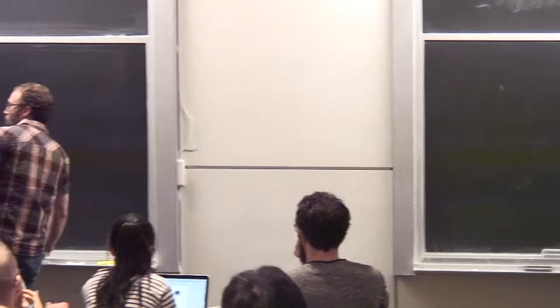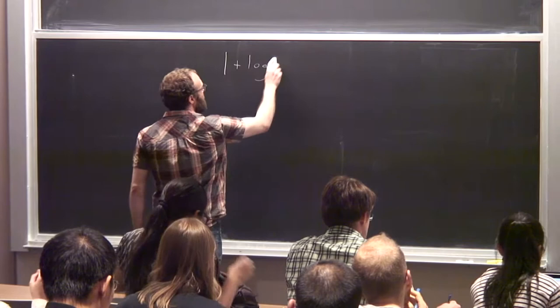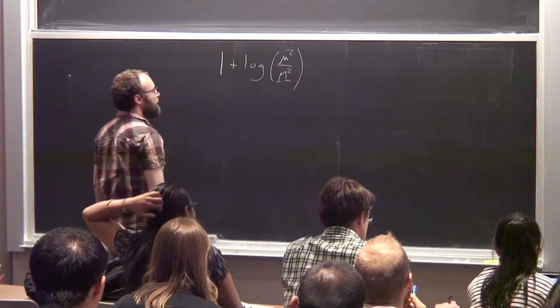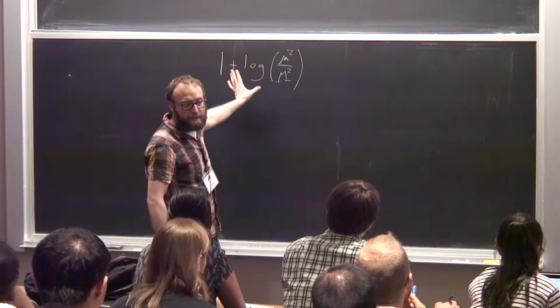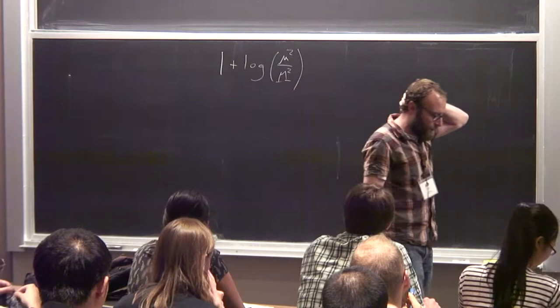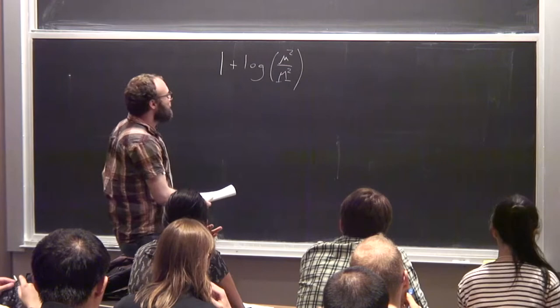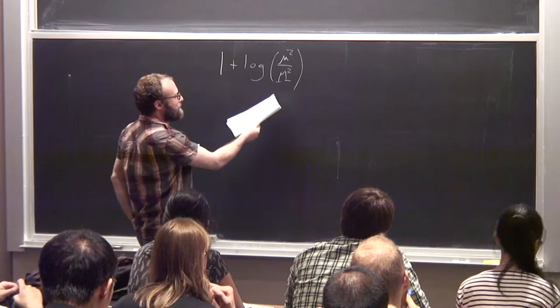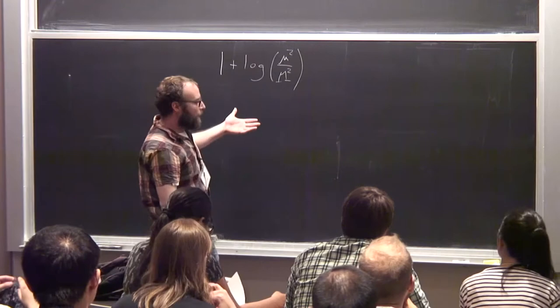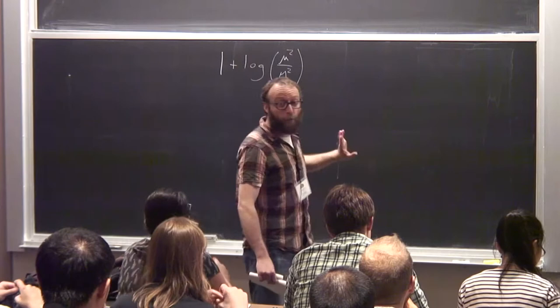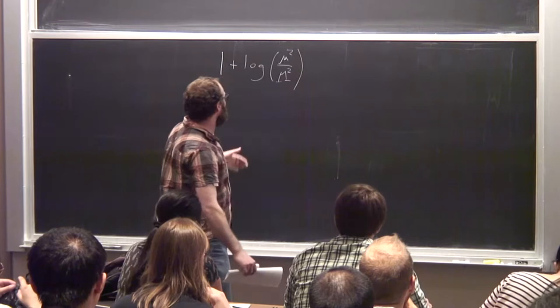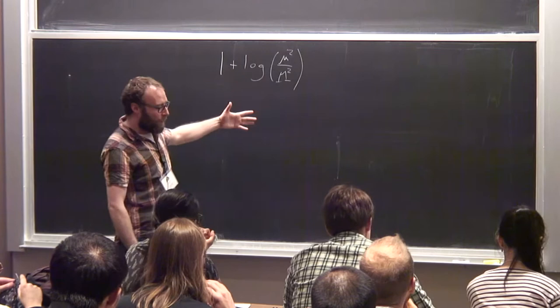I want to very briefly mention the excellent question raised about the term one plus log mu squared over m squared, and being able to choose the renormalization scale at the high scale to cancel this — this was in the context of the quadratic divergence problem. I thought about it a lot, chatted with my postdoc Marat Freitsis, who's an expert in this. What I was guessing was the right answer is not true. It's not true that if you move mu around, it'll show up somewhere else.